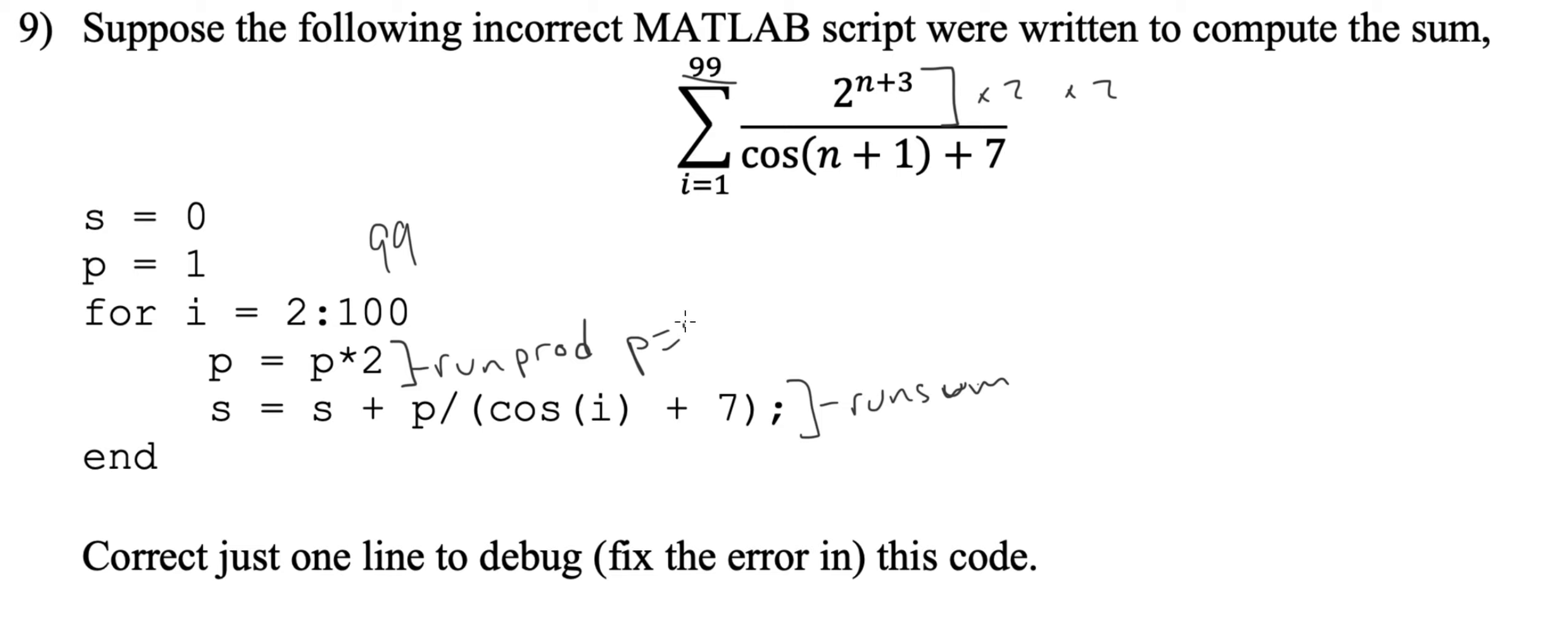And then our second one you have s equals s plus P divided by cosine of i plus 7. So this will be s equals 0 plus P, which is 2, divided by cosine of i, which is 2, plus 7, this is all in parentheses, right?